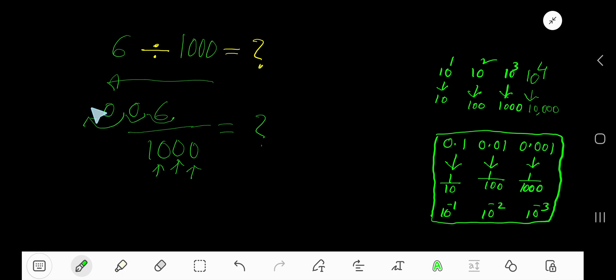So 1, 2, 3. So we are getting decimal 0, 0, 6. You can add here one more zero to mean that this is less than 1. So 0.006 is your answer.